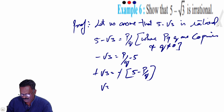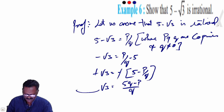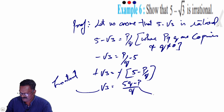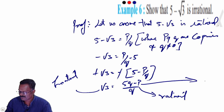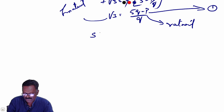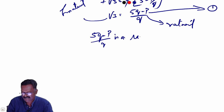The minuses cancel. Root 3 is equal to 5q minus P by Q, which is a rational number.